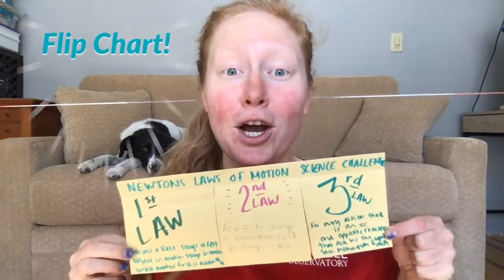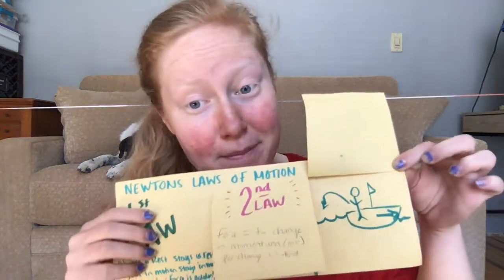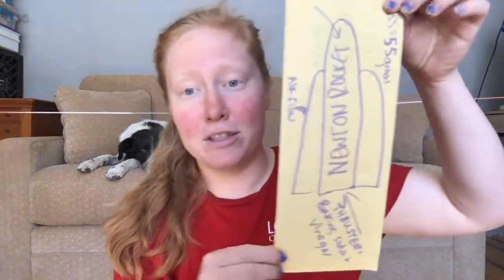Now that we understand Newton's third law of motion, it's time to pull out your flip chart. Here you're going to write your third law — for every action there is an equal and opposite reaction that acts with the same momentum and opposite velocity. Then you're going to draw your best interpretation of this law. I drew myself in a boat jumping off. Then you're going to review the first, second, and third laws, and use the back to draw your Newton rocket design.